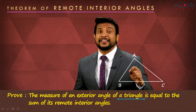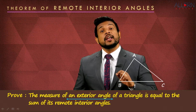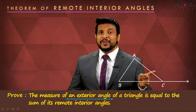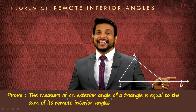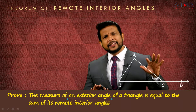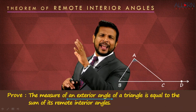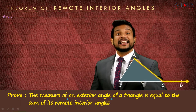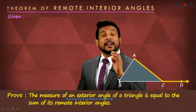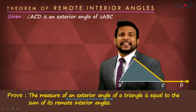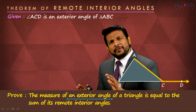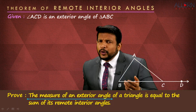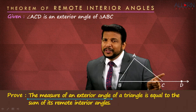From the statement, we understand that we need to have a triangle, so we consider a triangle ABC. We need to have an exterior angle, so we have an exterior angle here — that is angle ACD. That's given to us, so we write that in the given: angle ACD is an exterior angle of triangle ABC.